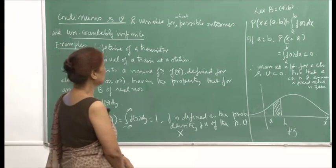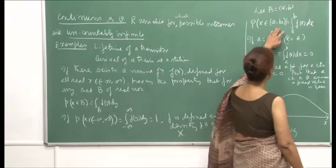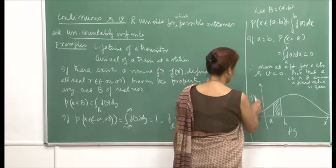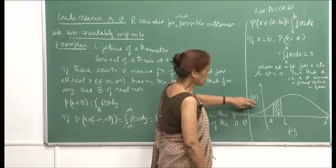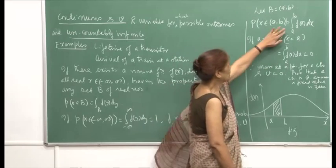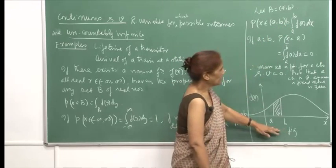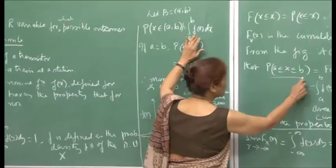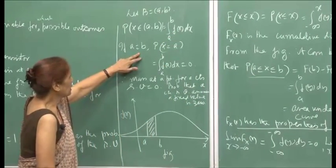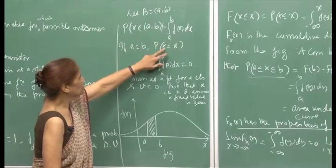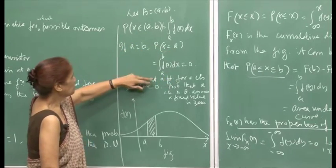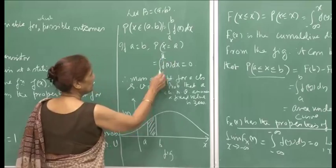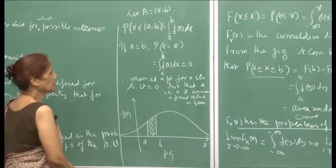If B is an interval, then the probability X belongs to (a, b) will be the integral from a to b of f(x) dx — that is, the area under the curve. If a equals b, this reduces to the probability X equals a, which is the integral from a to a of f(x) dx, and by definition of the integral this is 0. Therefore, the probability that a continuous random variable assumes a fixed value is 0.